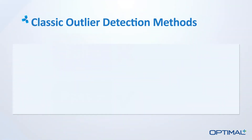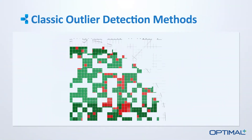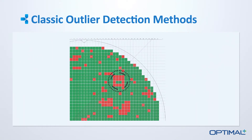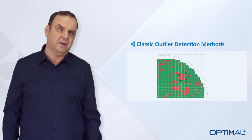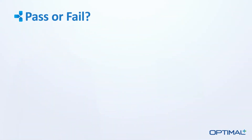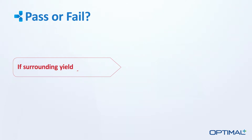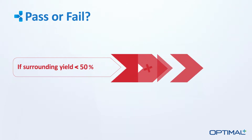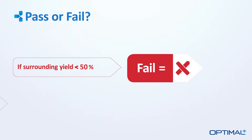Classic outlier detection methods will reclassify a part as bad if it is surrounded by faulty dice. An engineer will typically set up a threshold for such a rule. For example, the engineer might decide that if the yield of surrounding dice is less than 50%, the part should be classified as bad.